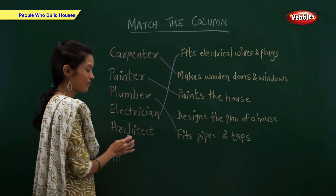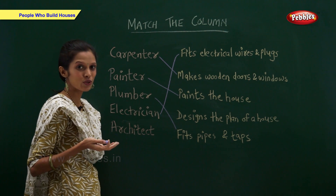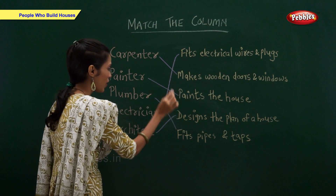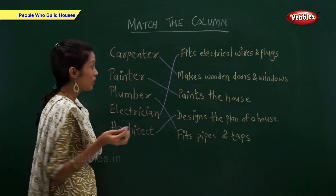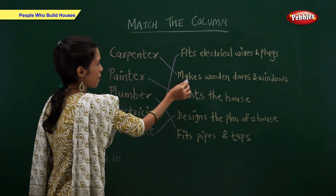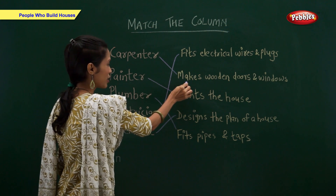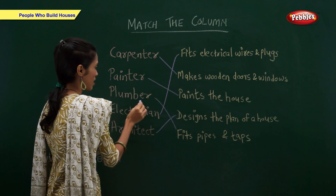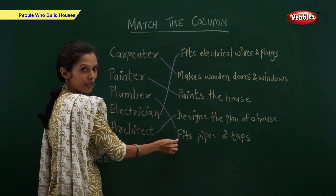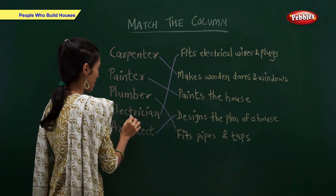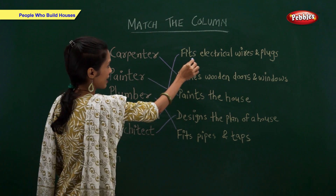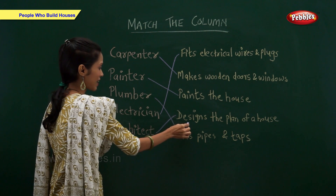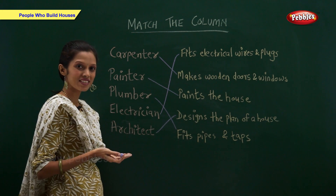Architect. What does an architect do? An architect designs the plan of a house. So: carpenter makes wooden doors and windows, painter paints the house, plumber fits pipes and taps, electrician fits electrical wires and plugs, and an architect designs the plan of a house.